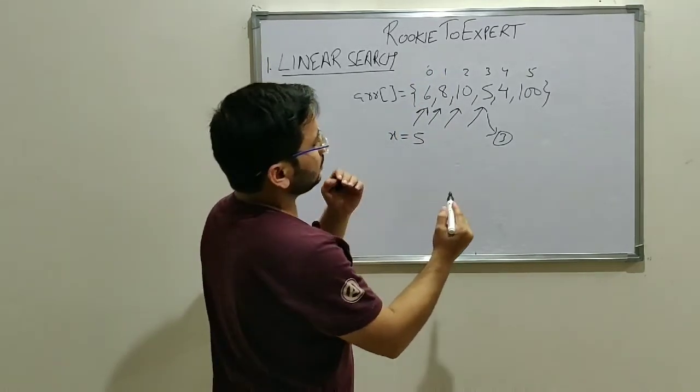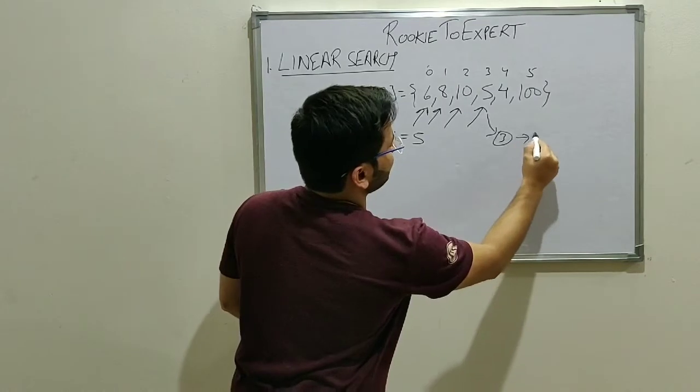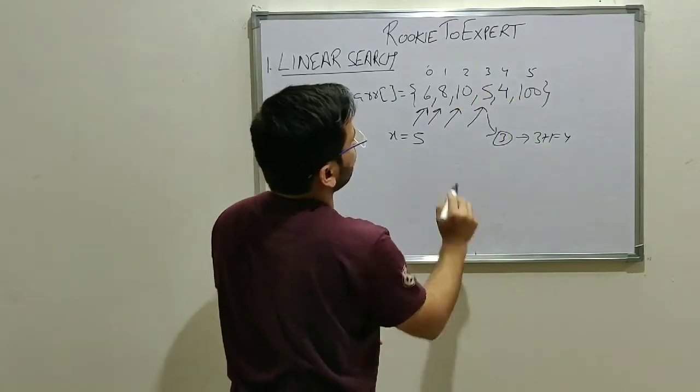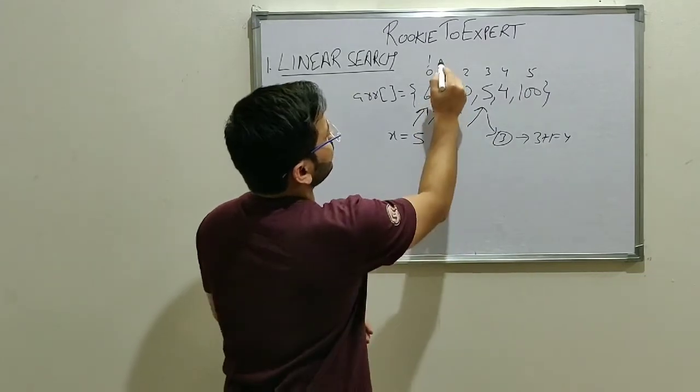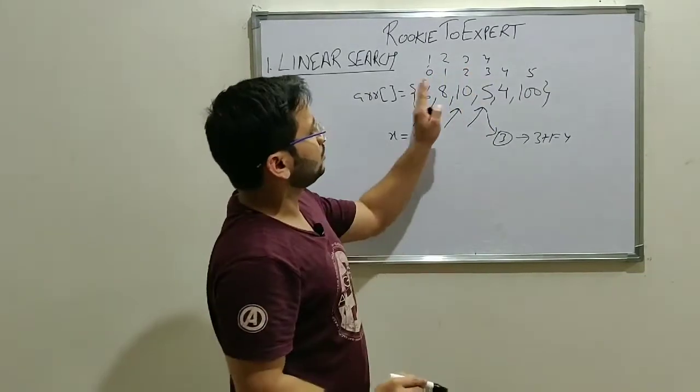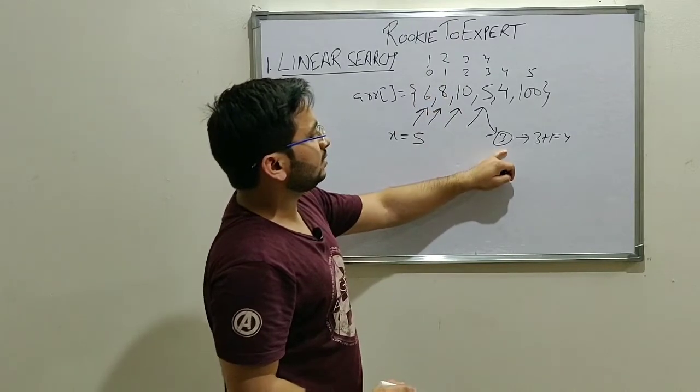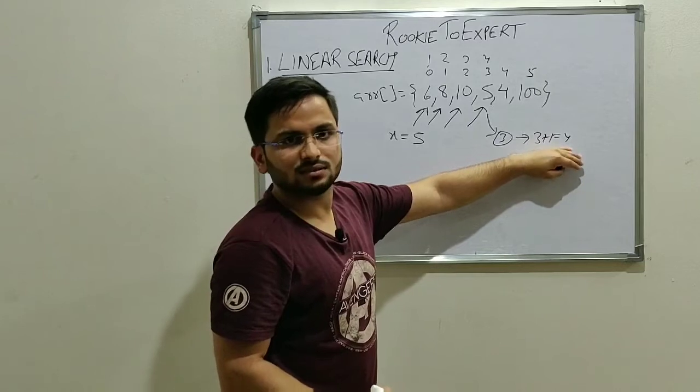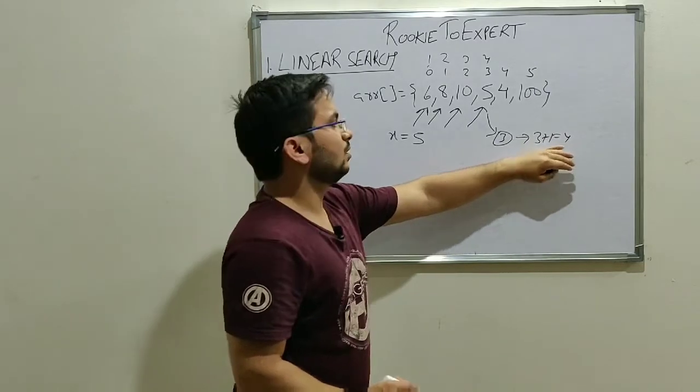Sometimes what we do is we give the index as 3 plus 1 equals 4 because it's the fourth position. So in counting, we count it as 1, 2, 3, 4 but in array, we count from 0. That's why we're returning 3. But if you want, you can return the fourth index as well.